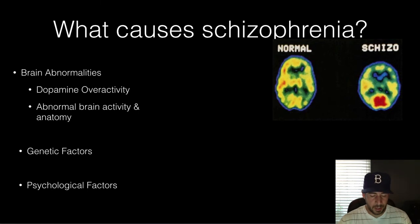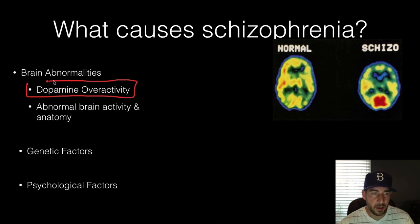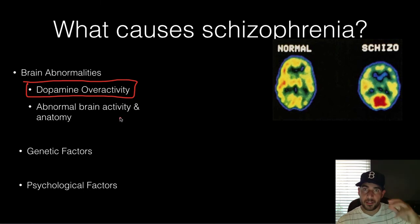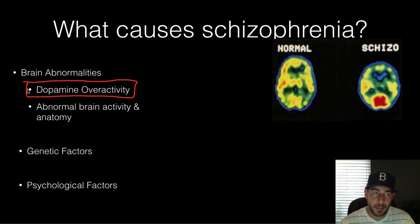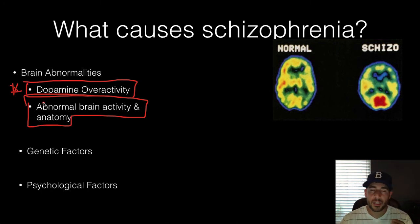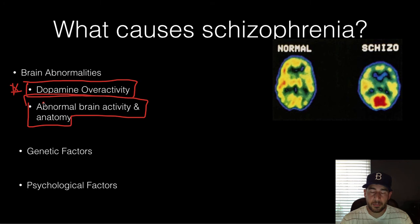What causes schizophrenia? One cause you should know for AP Psychology — it's often asked on the test — is dopamine overactivity. Dopamine is a neurotransmitter, and too much dopamine can cause a hyperactive brain. If your brain's hyperactive, it can start hearing and seeing things. There's also abnormal brain activity and anatomy — PET scans and MRIs are showing enlarged sacs in particular parts and less dense gray matter in parts of the brain.